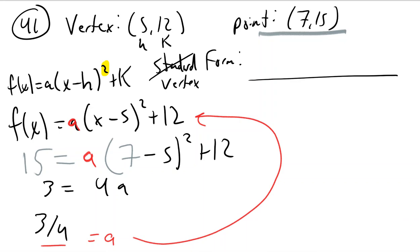It looks like a was supposed to be 3/4. So in the end, 3/4(x - 5)² + 12 is what I'm guessing they're looking for. So sometimes you have to do that to solve for a.